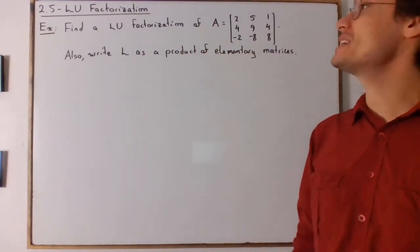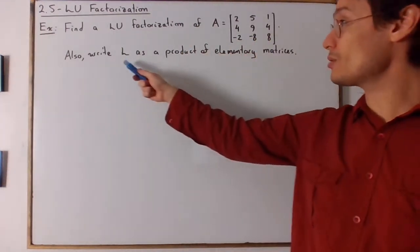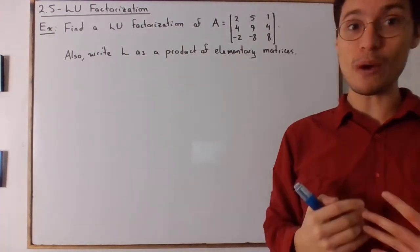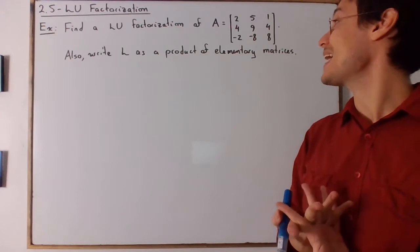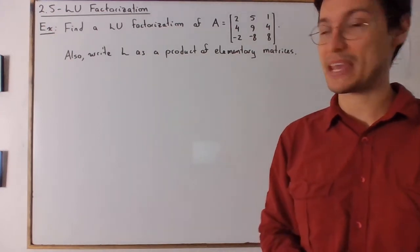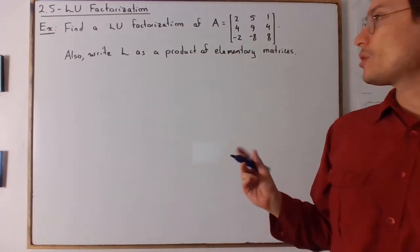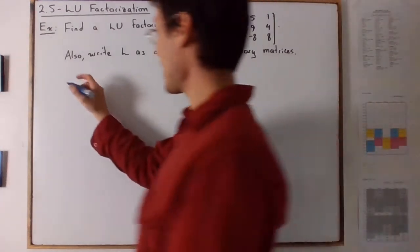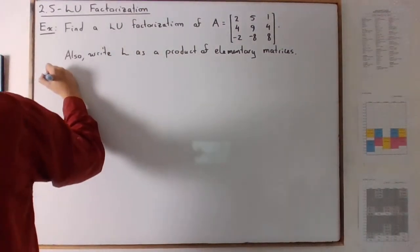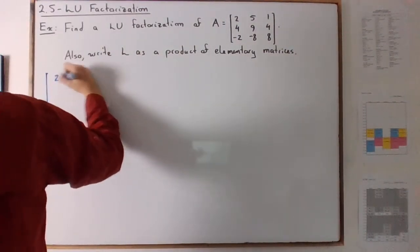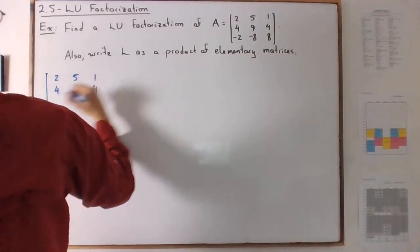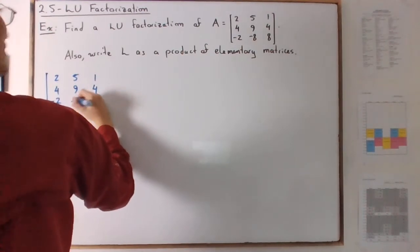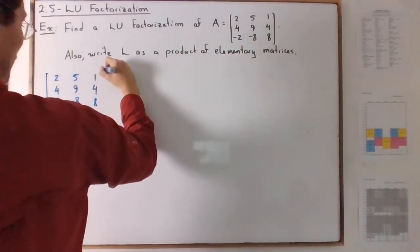Alright, so find the LU factorization of this matrix. And we are also asked a sub-question which is to write the matrix L as a product of elementary matrices. Let's start with A. We have 2, 5, 1, 4, 4, 9, 4, and negative 2, negative 8, 8.